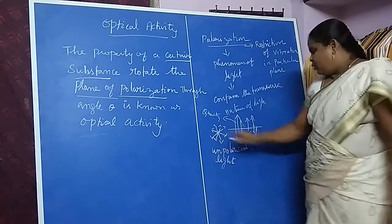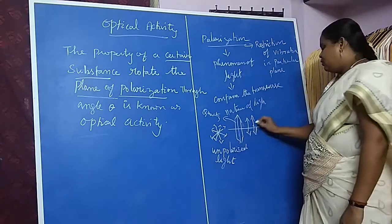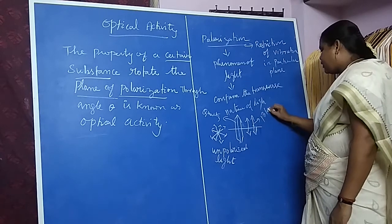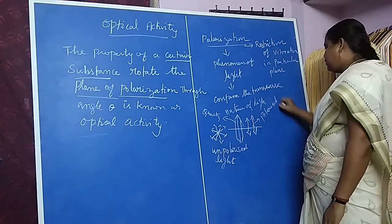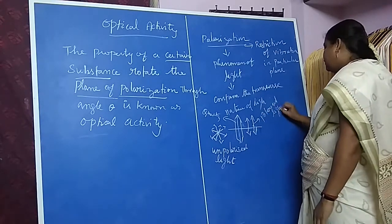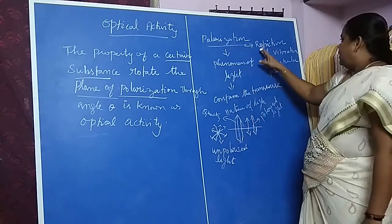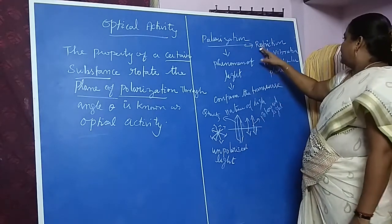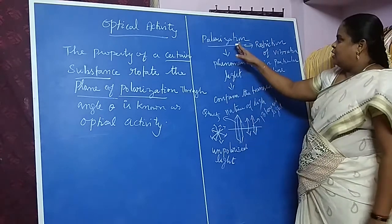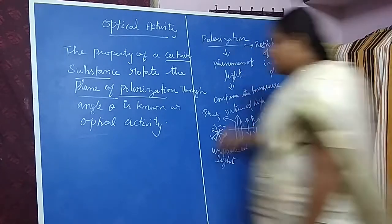This is unpolarized light. After passing through the crystal, we get polarized light. This is the phenomenon — restriction of vibration in a particular plane — that is called polarization.